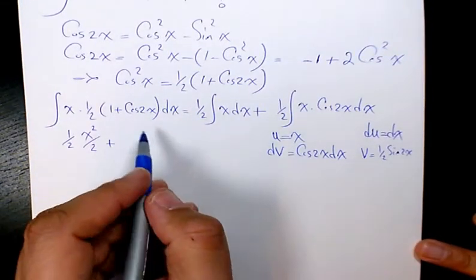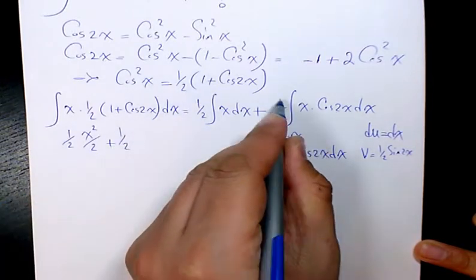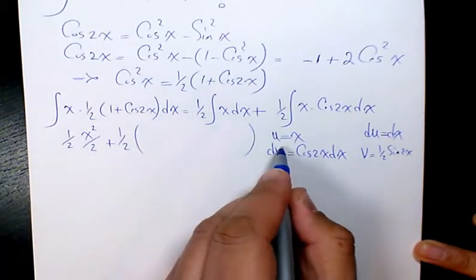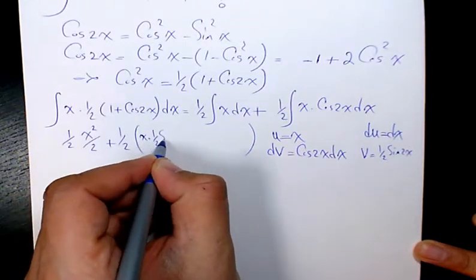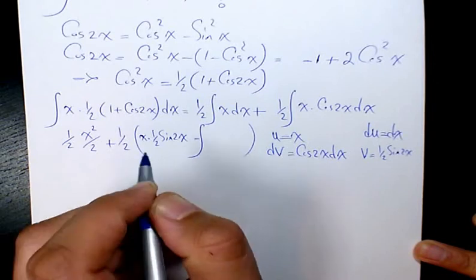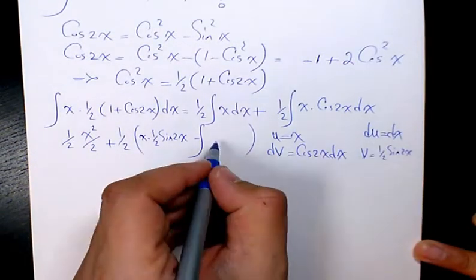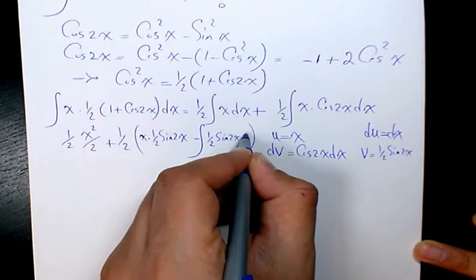And then I'm going to substitute it here. I will have 1 over 2, which is this one, times u times v, which is x times 1 over 2 sine 2x, minus the integral of v du, which is 1 over 2 sine 2x dx.